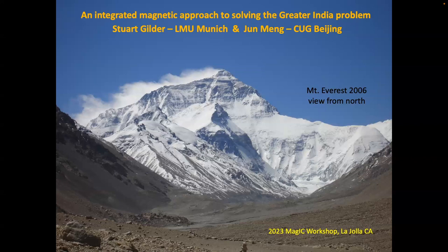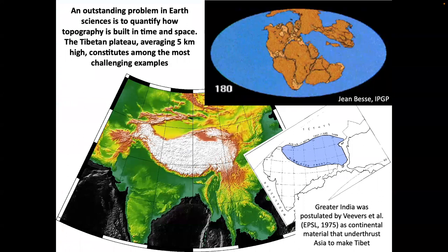As a paleomagnetist, I see potential problems in how people use certain things, even the fold test — maybe in a new way to think about it. This is Tibet in white — everything above 4,000 or 5,000 meters. What I love about our discipline is I'm really interested in how topography is built in time and space. I call it the Delta Z problem — how fast does topography get built? And I think Tibet is an amazing example of that.